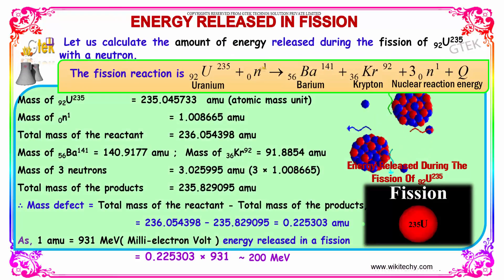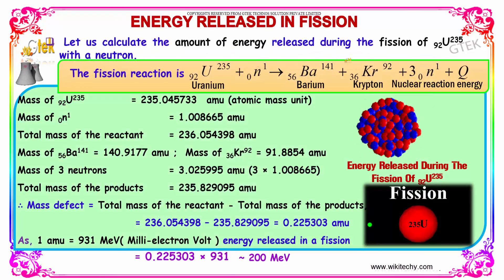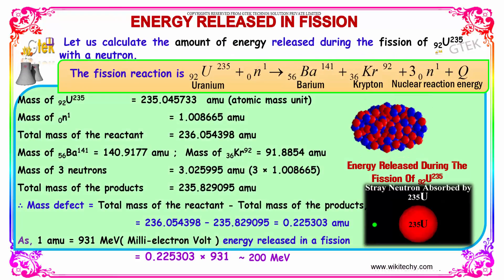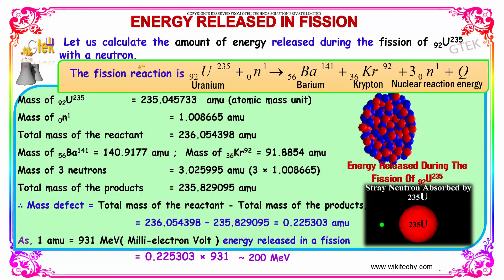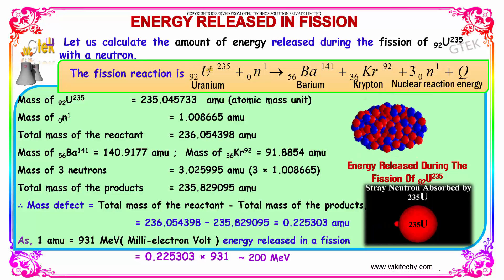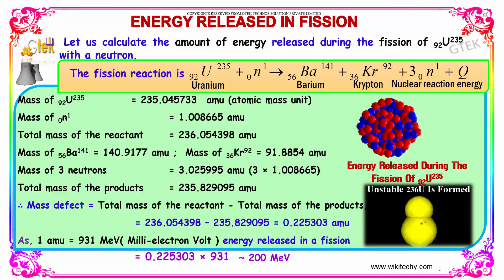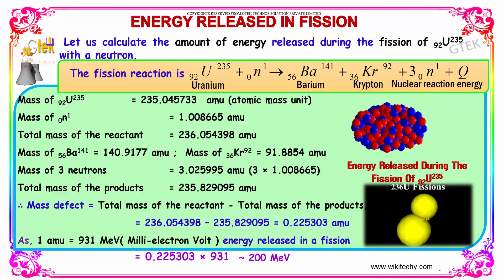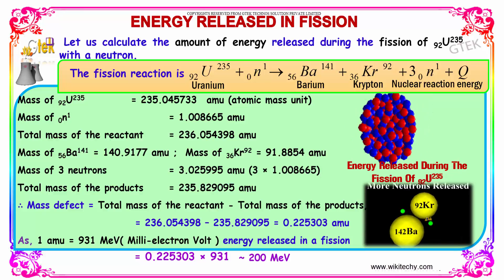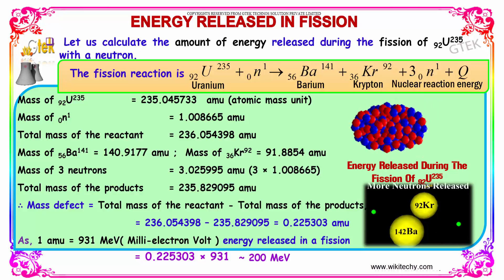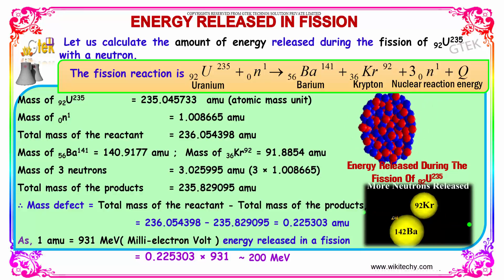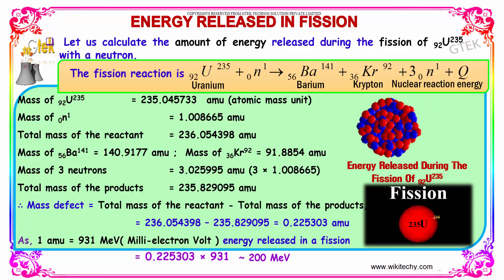Now, let us calculate the amount of energy released during the fission of uranium with a neutron. Uranium with a neutron becomes unstable and gives barium and krypton. This is how the reaction proceeds, with the release of neutrons and energy.